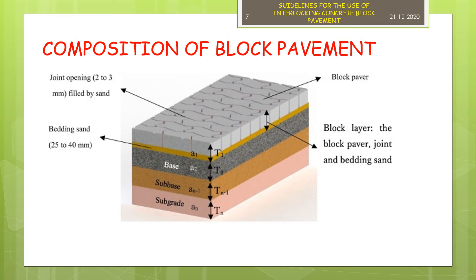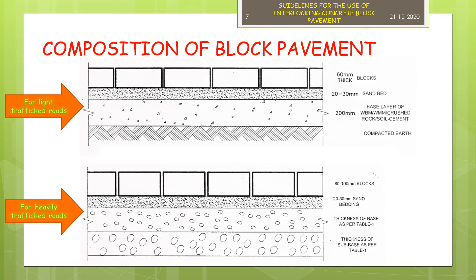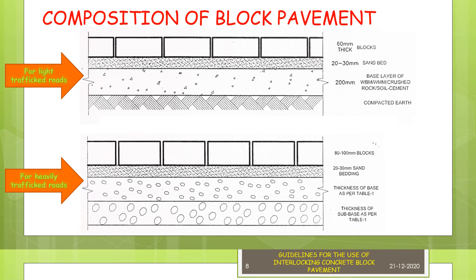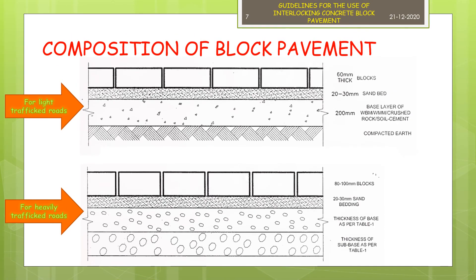A few typical compositions normally used are given in these two figures. The first figure depicts a typical cross section of block pavement used in sidewalks, footpaths, car parks, and cycle tracks. The second figure is a typical cross section of block pavement for heavily trafficked roads.